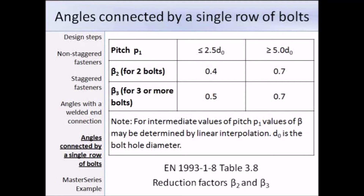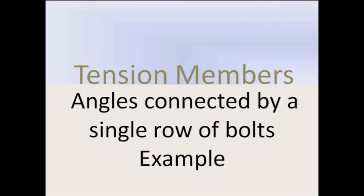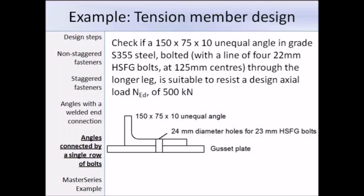We've gone through the main points about angles connected by a single row of bolts, and now we have an example to go through. In this example we have to check if a 150×75×10 unequal angle in grade S355 steel, bolted with a line of 4×22mm bolts at 125mm centres through the longer leg, is suitable to resist a design axial load NAd of 500kN. At the bottom is a sketch of that arrangement.